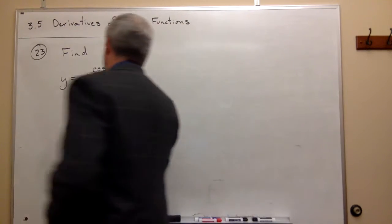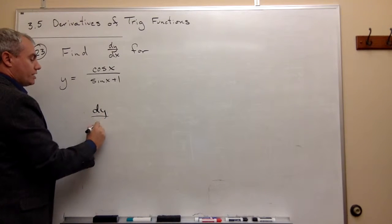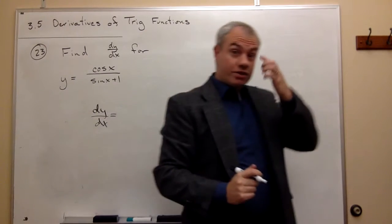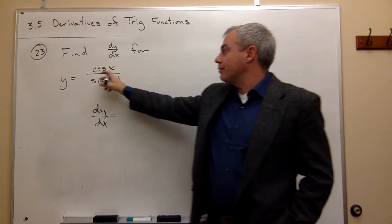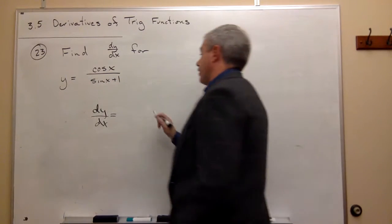So the quotient rule, we should be familiar with that by now. And so dy over dx, the first thing that we do whenever we use the quotient rule is we take whatever is on the bottom of the fraction and we write it down first. So let's go ahead and write that down.